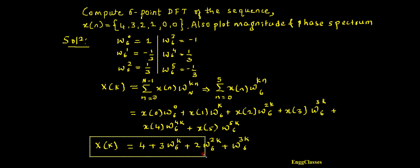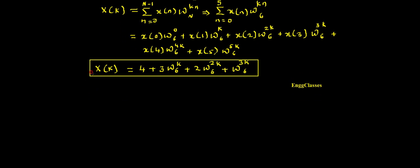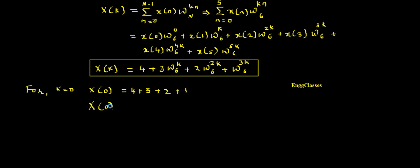Now I will vary k from 0 to 5 to get the 6 DFT coefficients. For k equal to 0: X(0) equals 4 plus 3 times W6^0 which is 1, giving 3, plus 2 times W6^0 which is 1, giving 2, plus 1 times W6^0 which is 1. So X(0) equals 4 plus 3 plus 2 plus 1 which is 10. This is the first DFT coefficient.